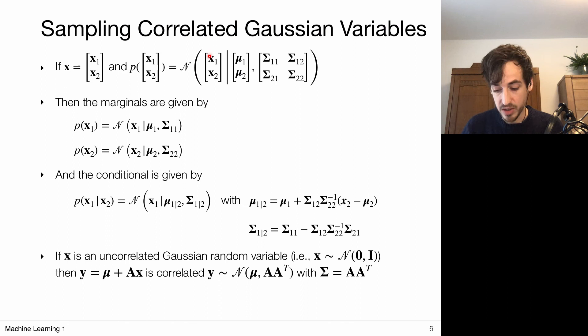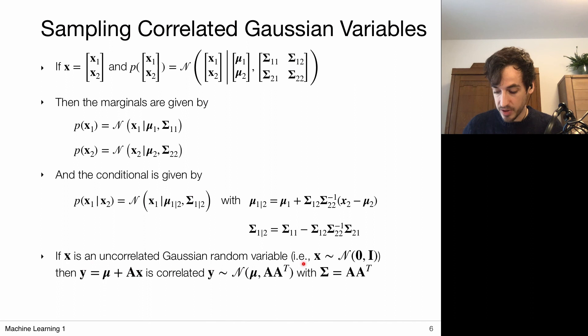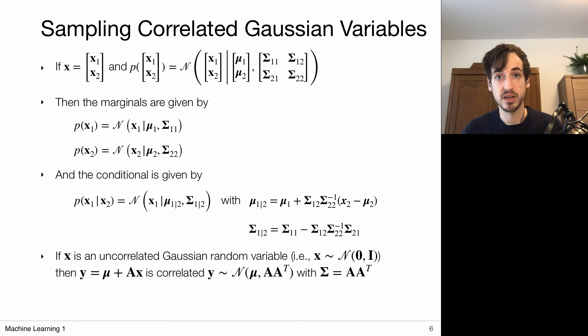If x1 is just a scalar, then mu1 is a scalar and sigma11 is a scalar; but x1 could also be a vector, in which case mu1 is a vector and sigma11 is a small covariance matrix. The same holds for the marginal for x2. From this splitting of my multivariate Gaussian, I can also directly obtain the conditional distributions, which are again Gaussian with particular means and covariance matrices for which we have expressions. Finally, if x is an uncorrelated Gaussian random variable, I can turn it into a correlated random variable via the forward model, and conversely, if I have a normal distribution with some covariance matrix I can split it into A A-transpose to generate correlated random variables from uncorrelated ones.